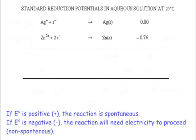Something to keep in mind is, if the overall E is positive, the reaction is spontaneous. If the overall E is negative, the reaction will need electrolysis, or electricity, to proceed, because it is not spontaneous, it needs energy in order to proceed.